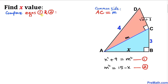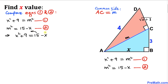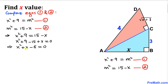Now let's compare equations one and two. Since both equal m², we can write x² + 9 = 15 − x. Moving all terms to the left side: x² + 9 − 15 + x = 0, which simplifies to x² + x − 6 = 0. This is a quadratic equation and we are going to solve it by factoring.